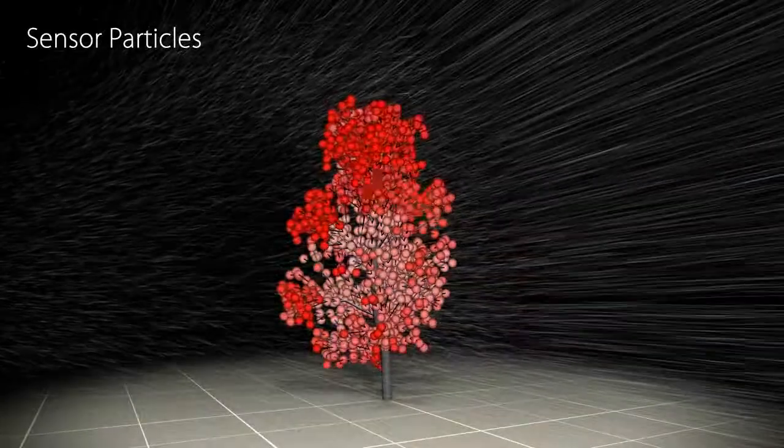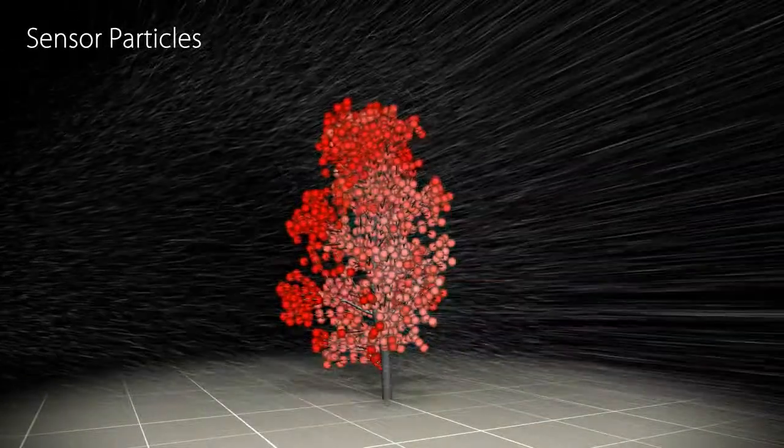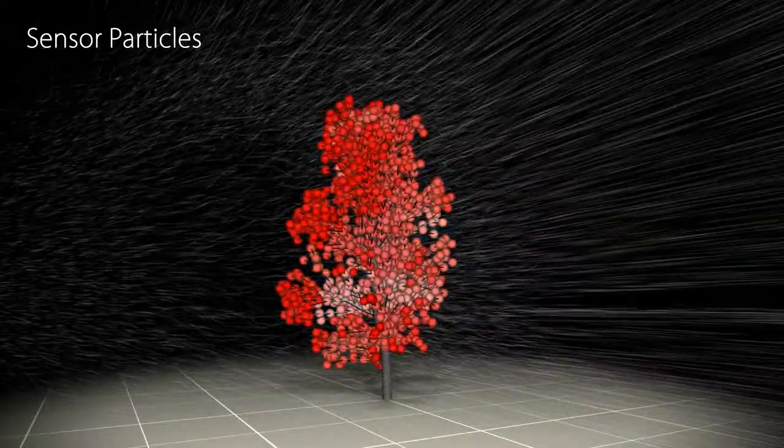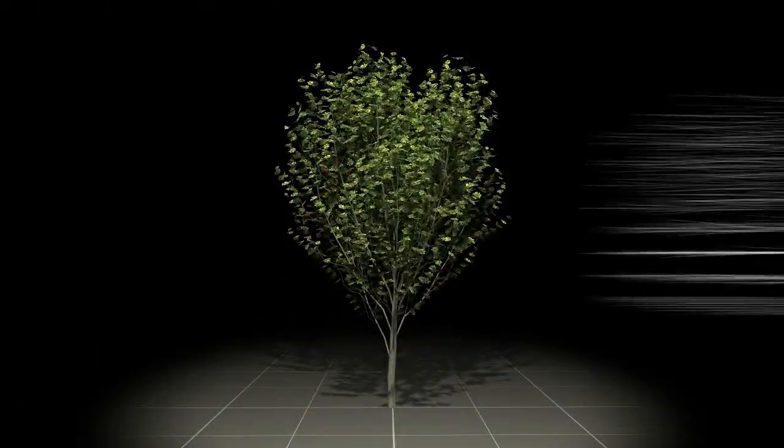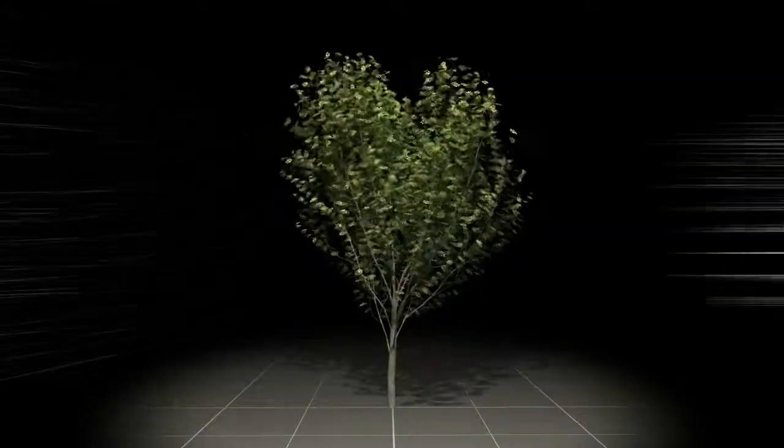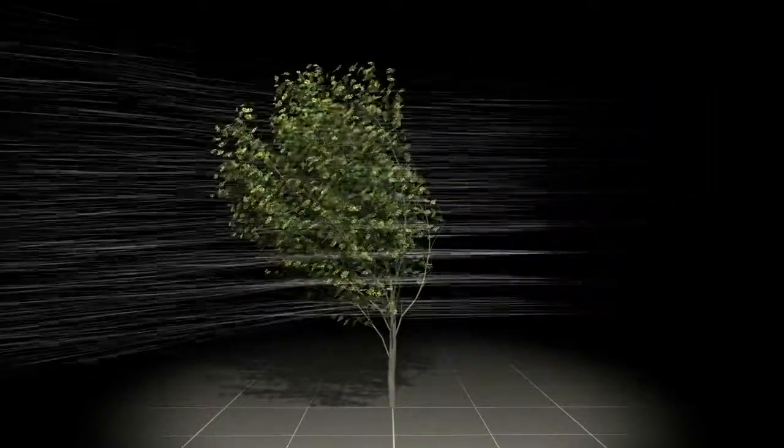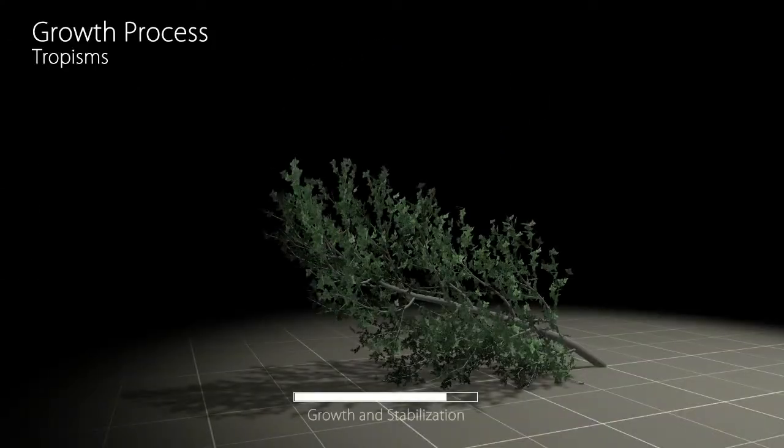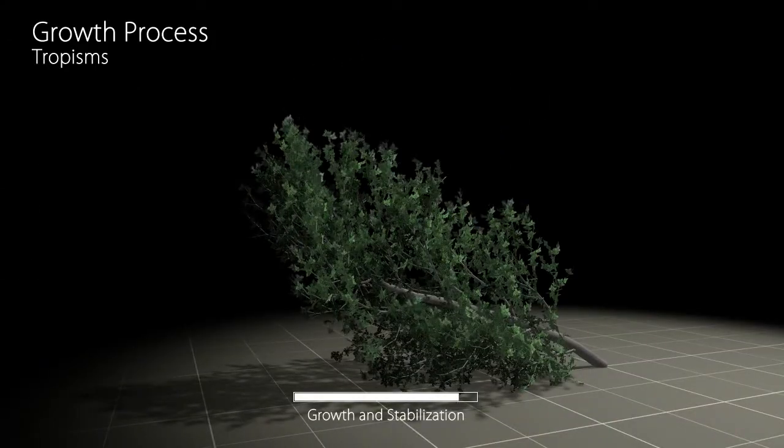We couple the wind simulation with the tree model by distributing sensor particles to the branching structure. Using our framework we can combine physically plausible simulations of wind with an evolved force model for the branch dynamics. This allows us to capture a variety of parameters to guide the growth process.